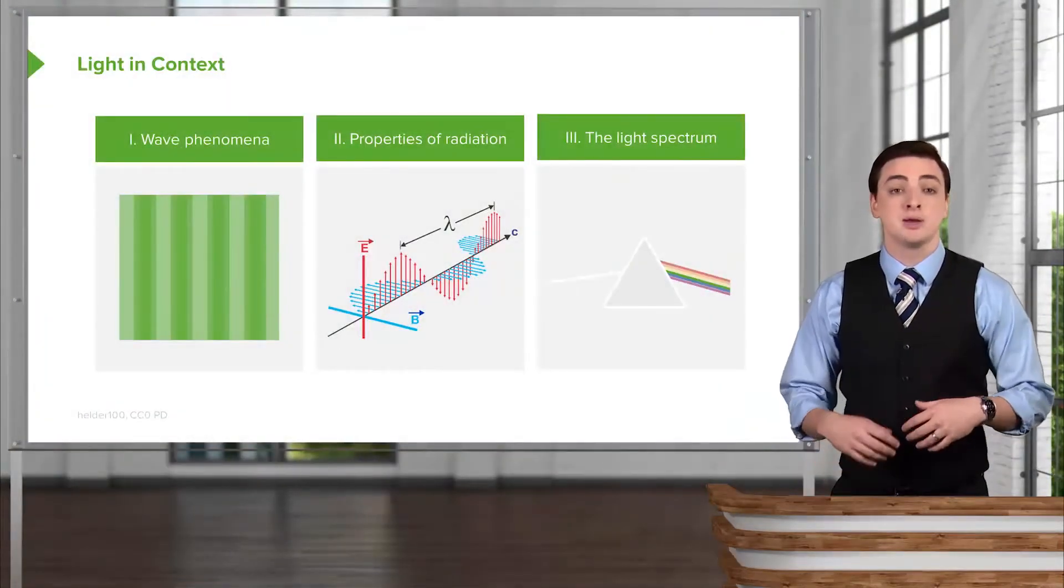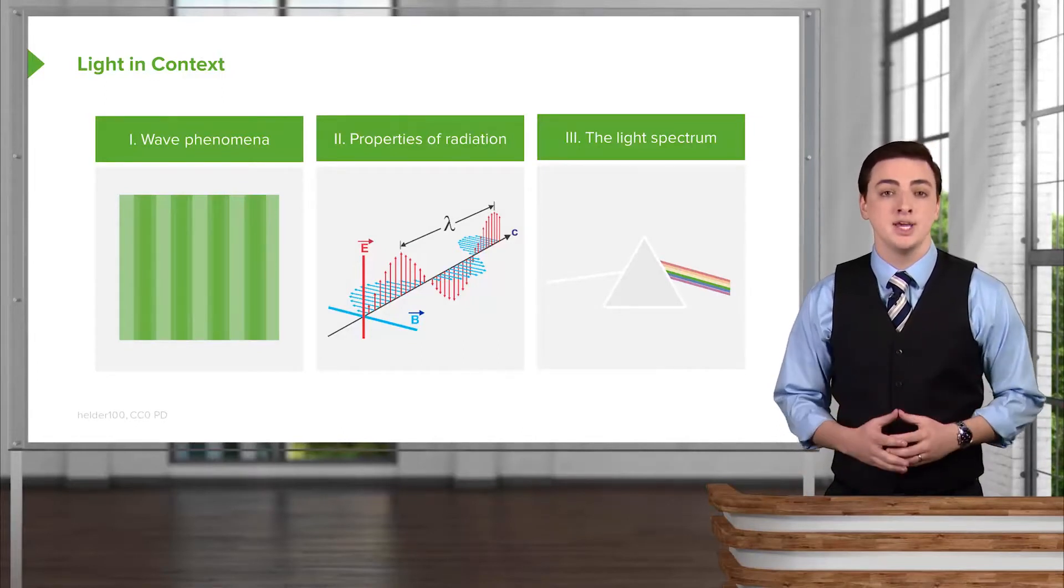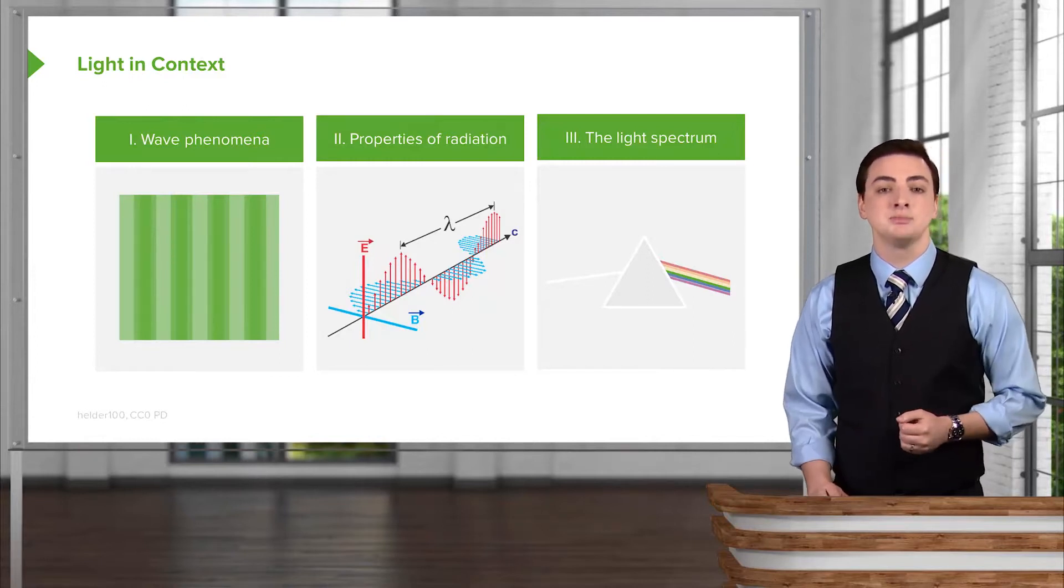As an overview with light, we'll talk about the wave phenomena first and then move on to the properties of radiation, electromagnetic radiation, and then talk about some of the light spectrum properties.